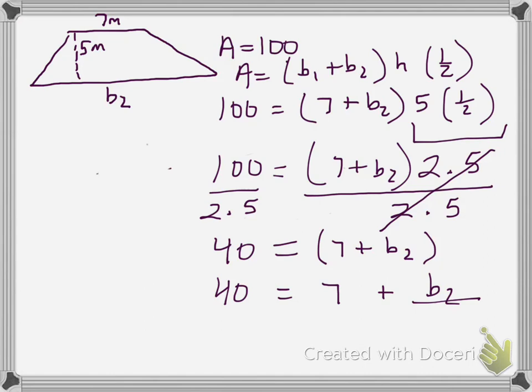If I subtract the 7 out of here, I subtract the 7 out of here, then these would cancel. 40 minus 7 is 33. And 33 would be base 2.